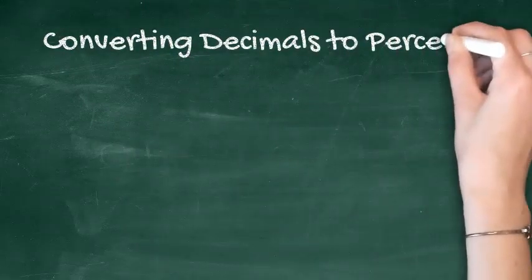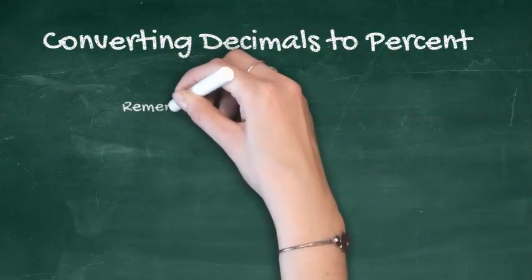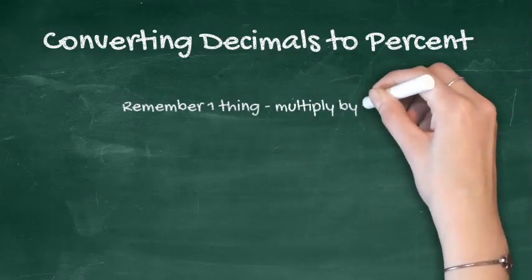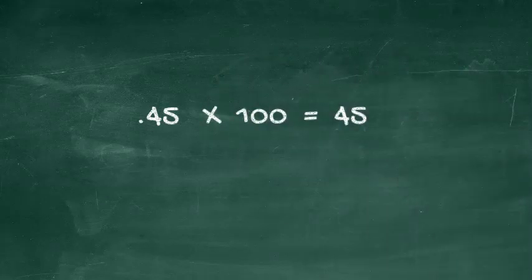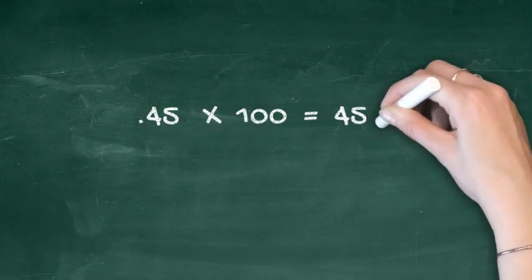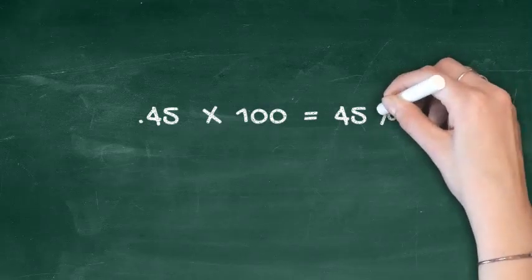Converting Decimals to Percent. Changing a decimal to a percent is easy if you remember one thing, multiply by 100. For example, if you start with 0.45, simply multiply it by 100 for 45. Then add the percent sign to the end, 45%.